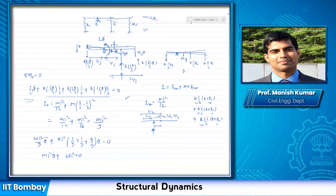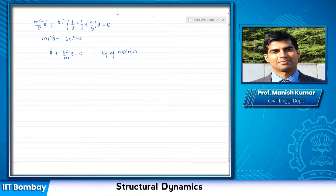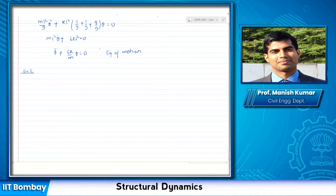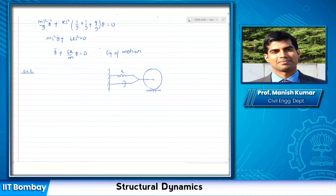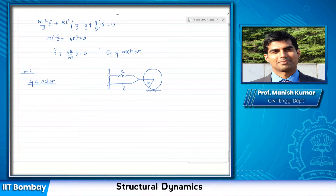Next problem: a spring-mass system but instead of a block, we have a disk of radius r connected to spring k and a damper. You need to set up the equation of motion. The key additional condition given is that this disk is rolling without slipping. The disk can both translate and rotate.